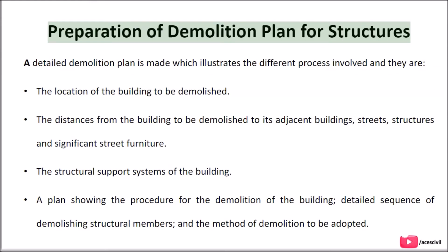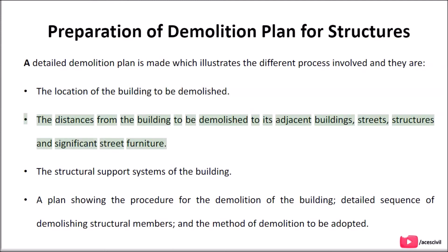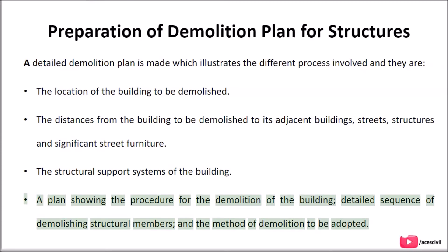Preparation of demolition plan for structures: A detailed demolition plan is made which illustrates the different processes involved. These include: the location of the building to be demolished; the distances from the building to be demolished to its adjacent buildings, streets, structures, and significant street furniture; the structural support systems of the building; a plan showing the procedure for demolition; a detailed sequence of demolishing structural members; and the method of demolition to be adopted.